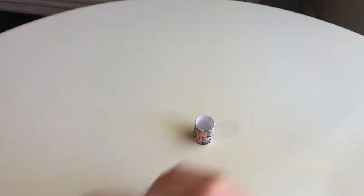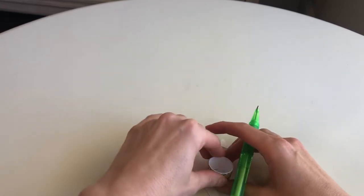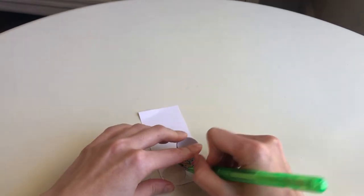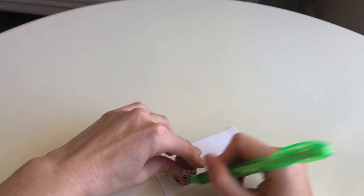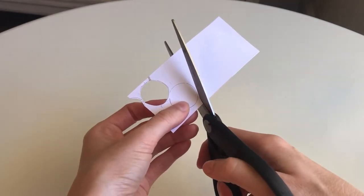Alright next you're going to grab your scrap piece of paper and you're going to trace the bottom of the cup. You're going to cut that out and glue it on the bottom of the cup.